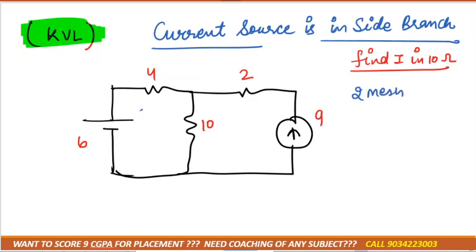One mesh is this one, we can mark it current direction as I1 and we can mark it as current direction I2. You can mark it according to your convenience, it's not necessary that whatever I mark you, you also mark the same.